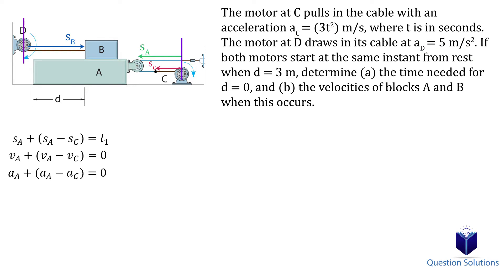Simplifying gives us 2AA is equal to AC. While AC is given to us in the question which is 3t squared. Negative in our case since we chose a position coordinate facing left to be positive and the motor pulls the cable right. That means AA is negative 1.5t squared or 1.5t squared to the right.